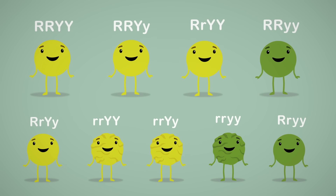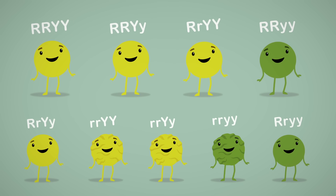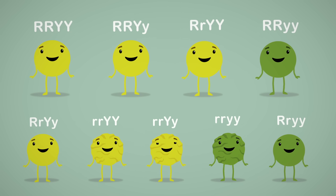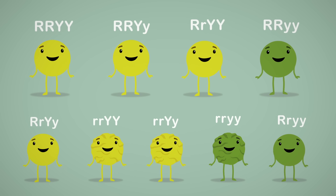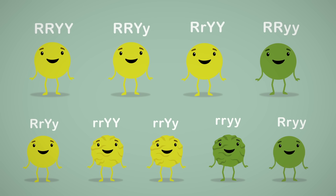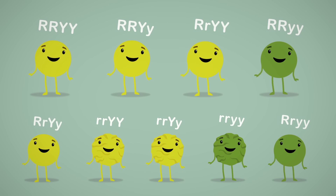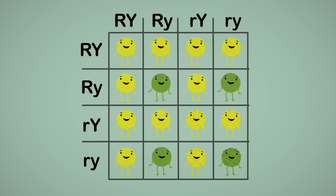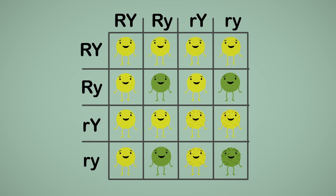But even peas have a lot of characteristics. For example, besides being yellow or green, peas may be round or wrinkled, so we could have all these possible combinations: round yellow peas, round green peas, wrinkled yellow peas, and wrinkled green peas. To calculate the proportions for each genotype and phenotype, we can use a Punnett square too. Of course, this will make it a little more complex.